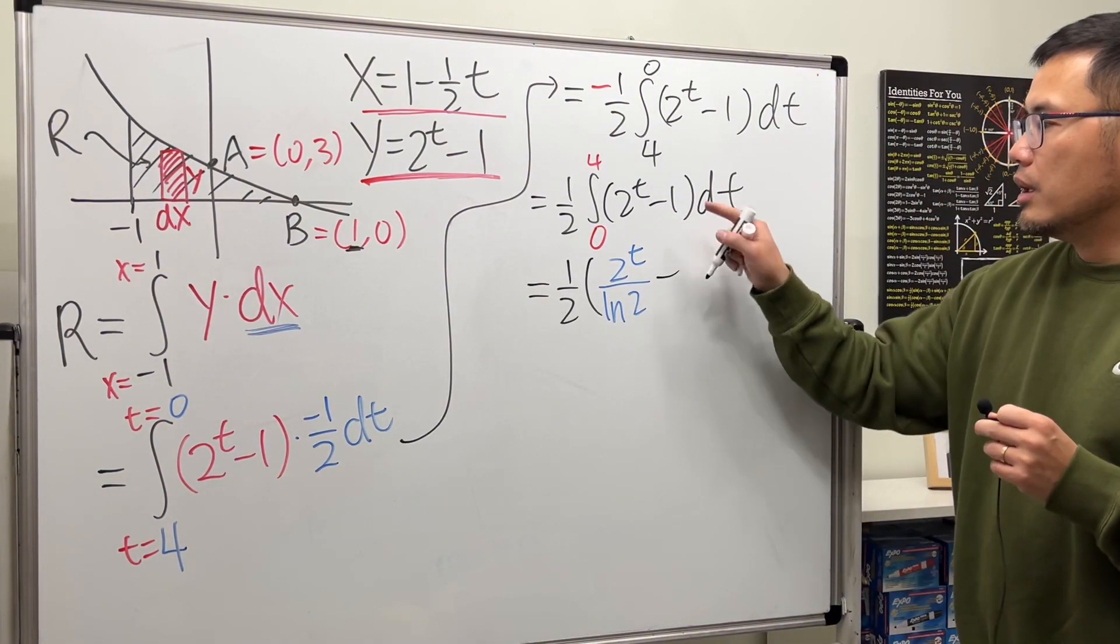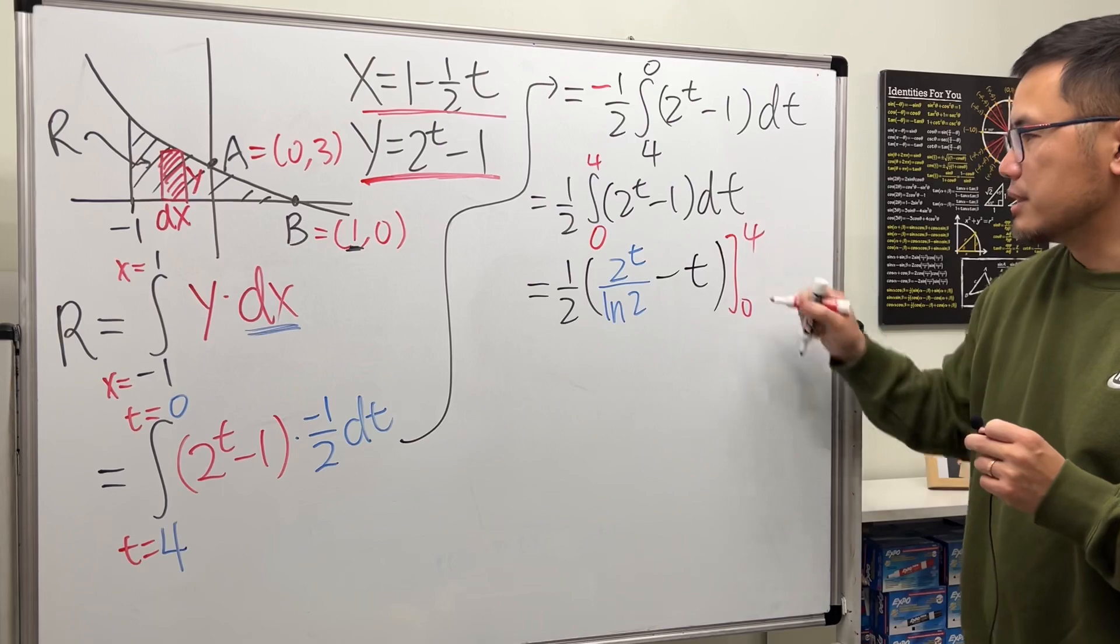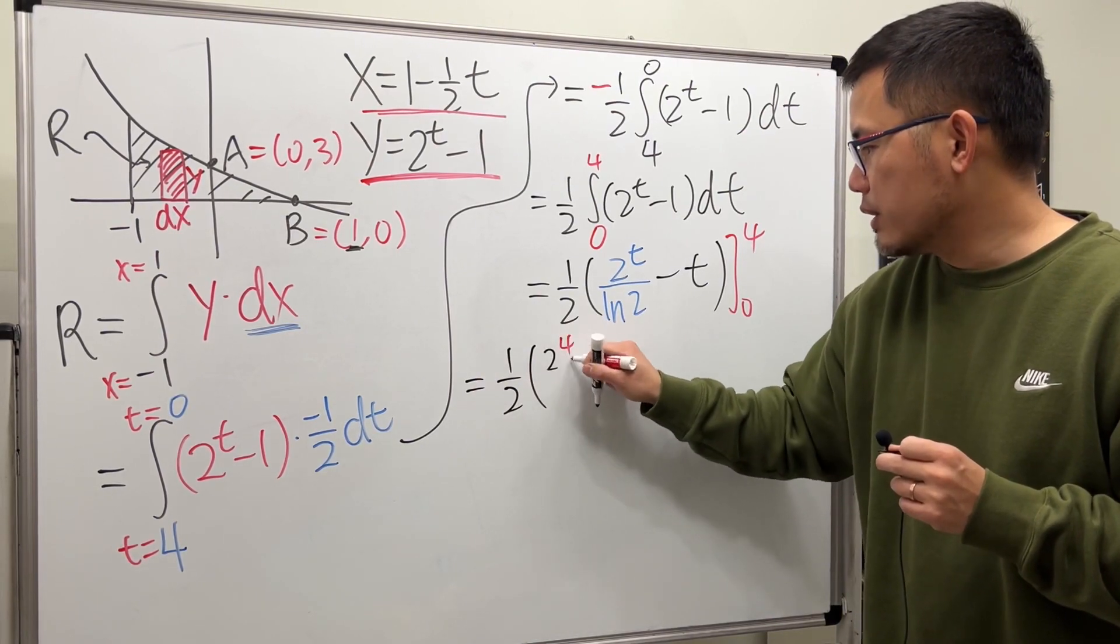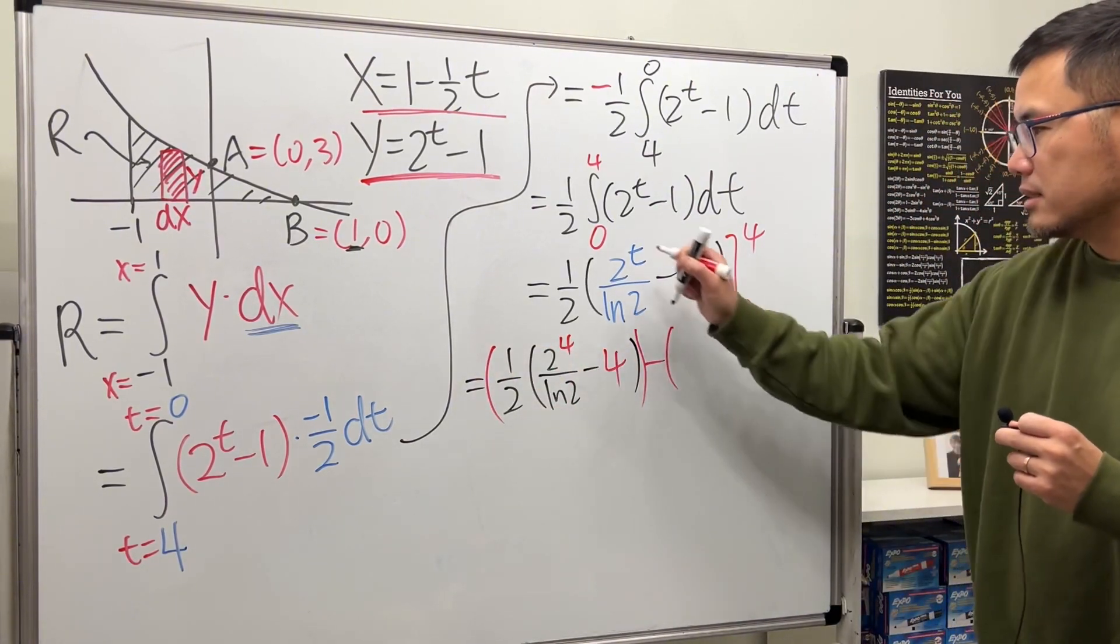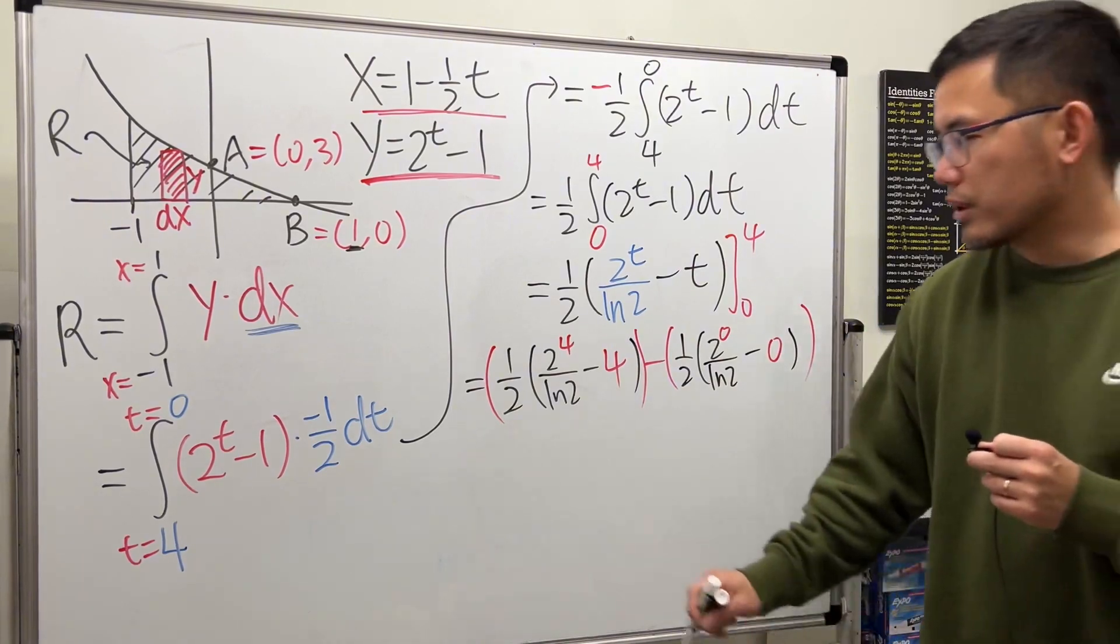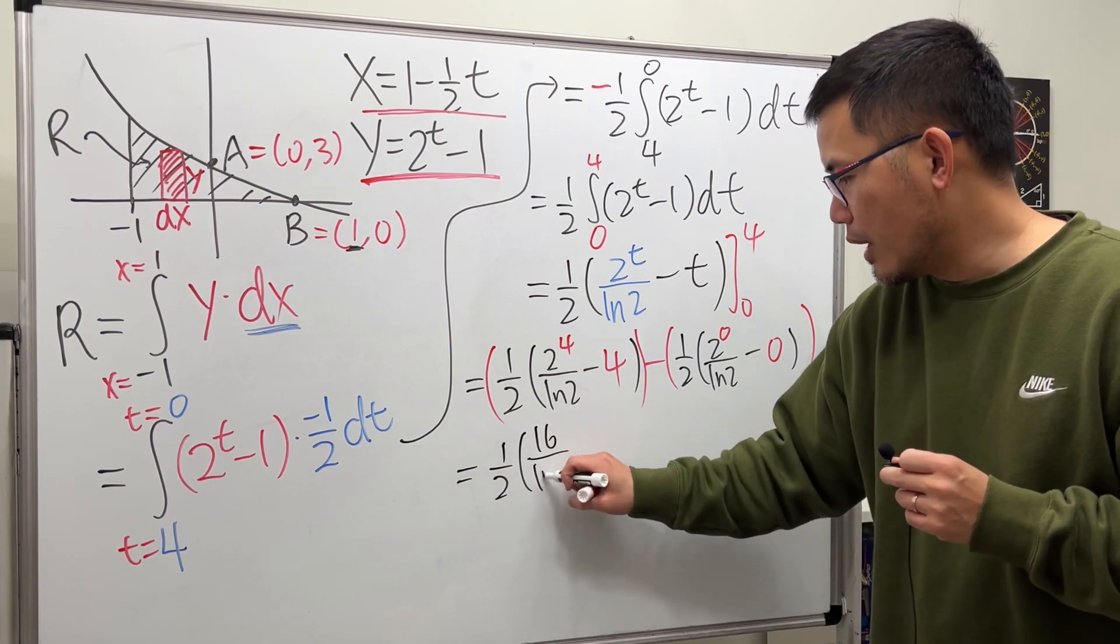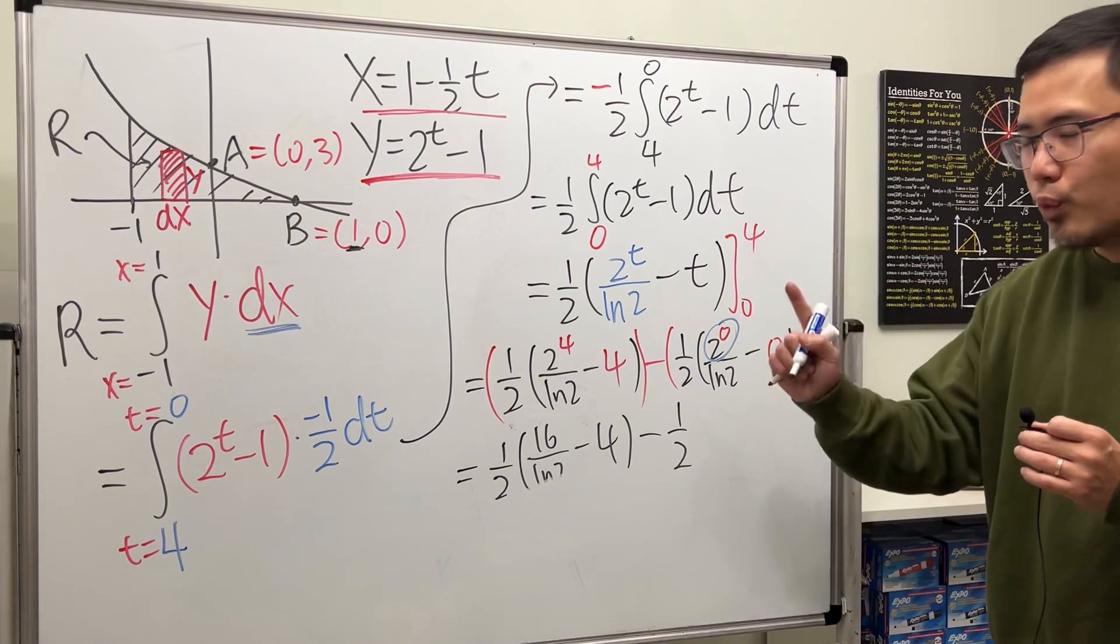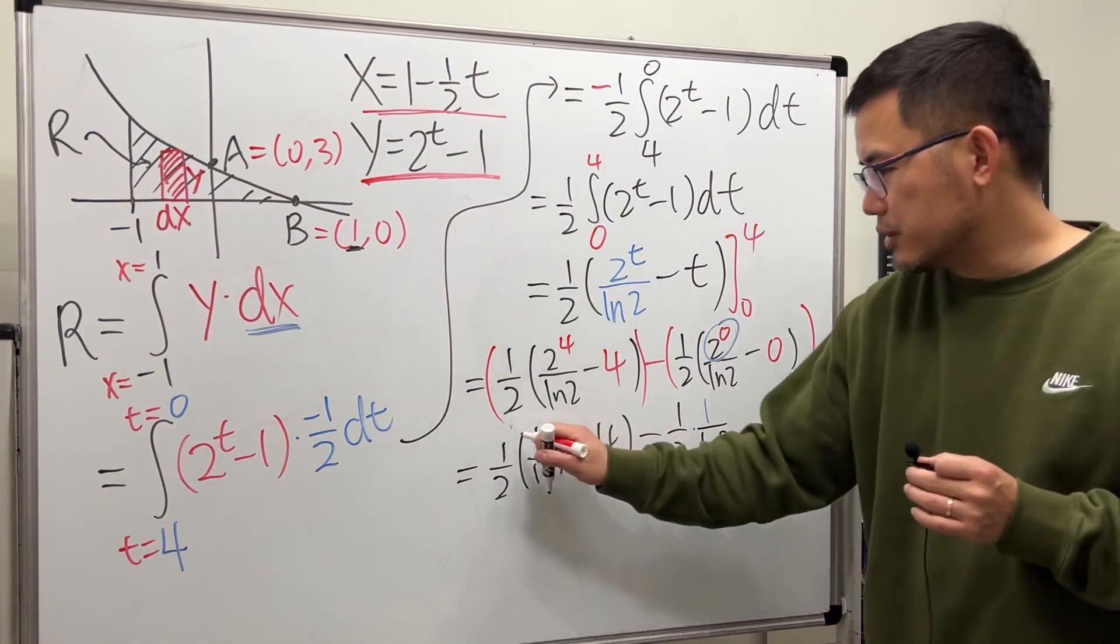Continue. Minus, integrating 1 in the t world we get t. Okay, and then go ahead and plug in the numbers. 4 goes in first, so we will get 1/2 times (2^4/ln2 - 4 in the t). That's the first part. And then minus plug in 0, we get 1/2 times (2^0/ln2 - 0). Okay, work this out. Here we have 1/2, and then this is 16/ln2 - 4 minus 1/2. And then remember 2^0 equals 1, so multiply by 1, and of course we still have that over ln2. And now let's just finish this. I will distribute.